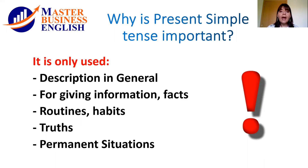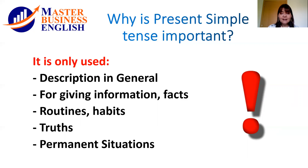Why is present simple tense important? First of all, it is used for description in general, for giving facts and information, for routines and habits, for truth, and also for permanent situations. These conditions are really important — you should know when to use only the present simple. If you have one of these conditions in the action you would like to express, you should use present simple and absolutely no other tense. But if you have a combination — some or all of these conditions — you must use only present simple tense.